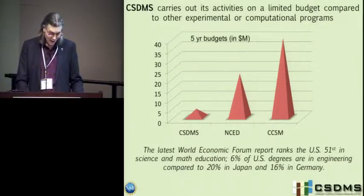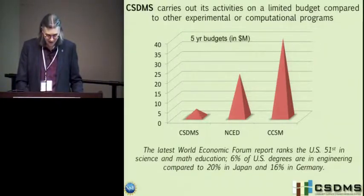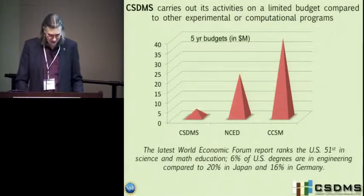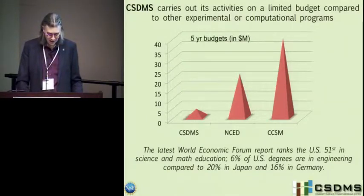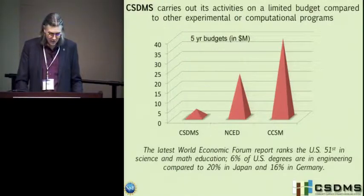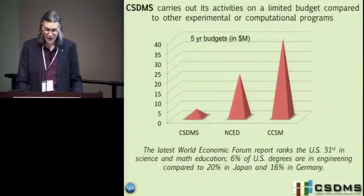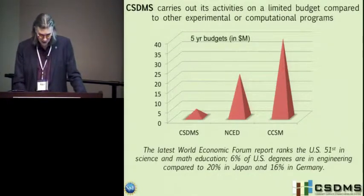This is a reminder to the U.S. folks in the audience: we're not doing so well in science and math education. We rank 51st in the World Economic Forum. We need a lot more money in the kind of work we do if we're going to reach end-to-end solutions for the problems before us over the next 100 years. Only 6% of U.S. degrees are in engineering, compared to 20% in Japan and 60% in Germany. I think in the U.S. we can do better.